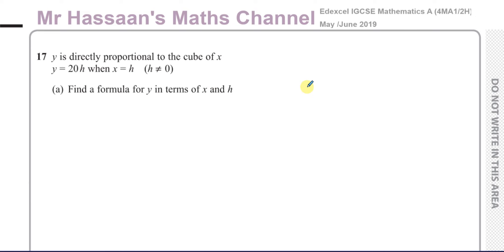This question here is a question about variation. We're told that y is directly proportional to the cube of x, to the cube of x, which means x cubed. That means y is directly proportional to x cubed. So they told us that y is 20h when x is h, and h can't be 0.